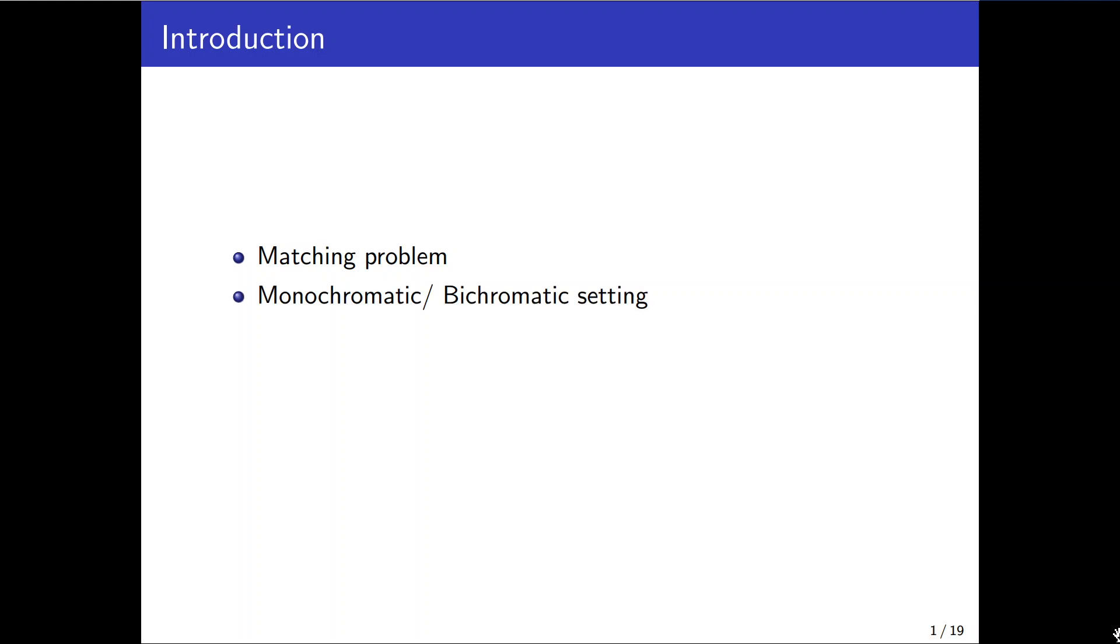The input of the matching point problem could be a set of monochromatic points in general position or a bichromatic setting in which half of the input are red and the rest are blue.